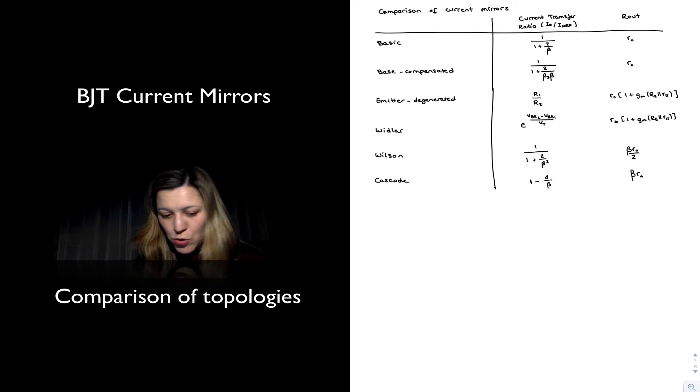For the Widlar current source, the current transfer ratio, we didn't exactly express it like this, but if you look at the expressions for i-reference and i-output, it will be the exponential function of the delta in V BE divided by V T. Same R out resistance as degenerated. Advantage of the Widlar current source is that it allows to generate very small currents without using very large resistors. That was the main advantage with respect to the basic mirror.